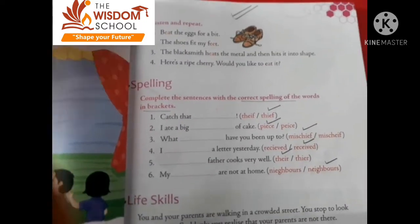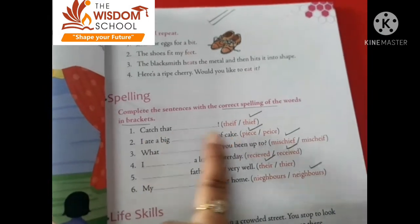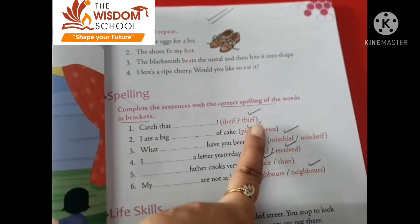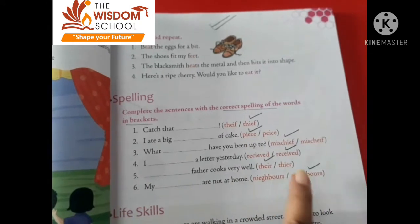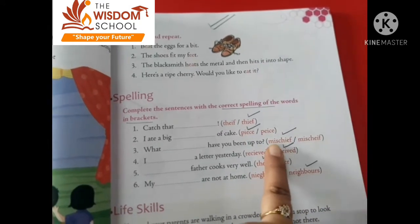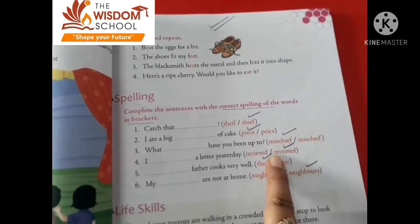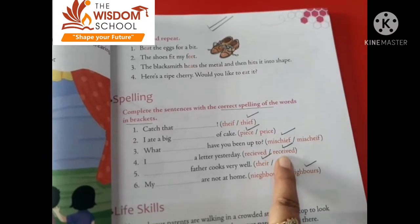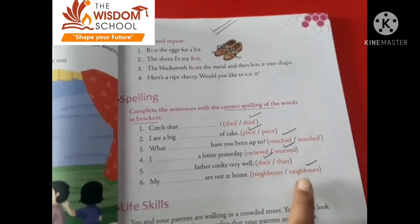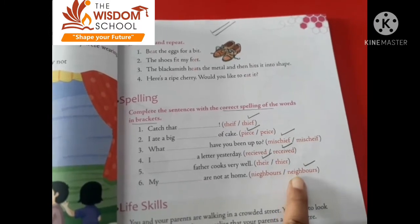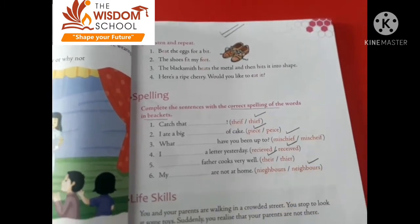The last topic is spelling. The spelling of 'thief' — catch that thief — T-H-I-E-F. 'Piece' — P-I-E-C-E. 'Mischief' — M-I-S-C-H-I-E-F. 'Received' — R-E-C-E-I-V-E-D. 'Their' — T-H-E-I-R. 'Neighbours' — N-E-I-G-H-B-O-U-R-S.